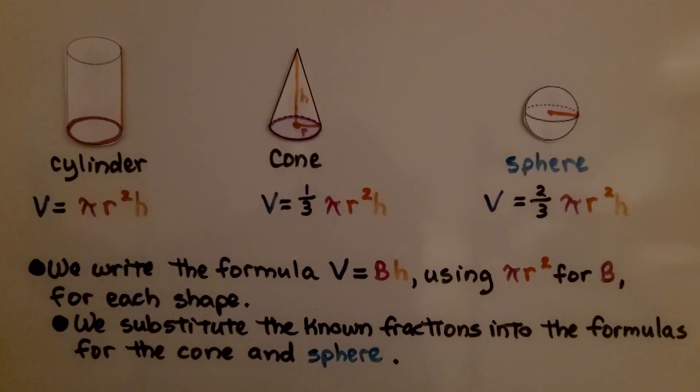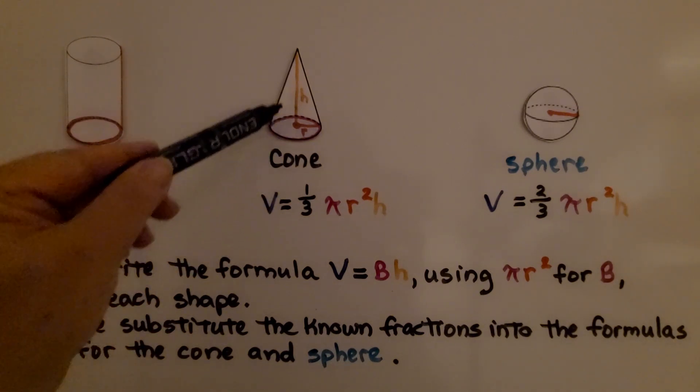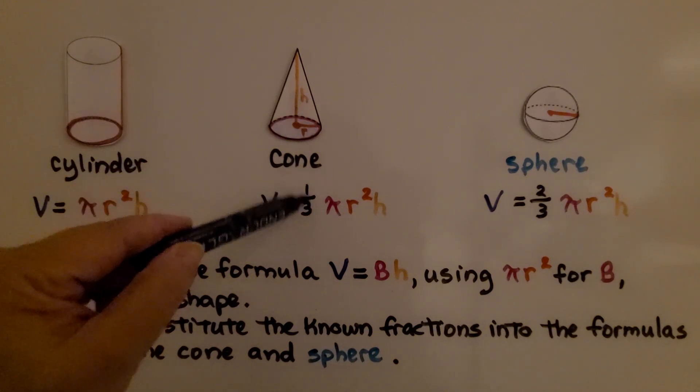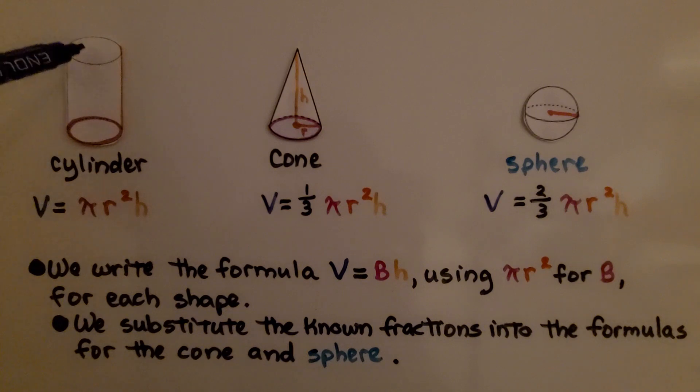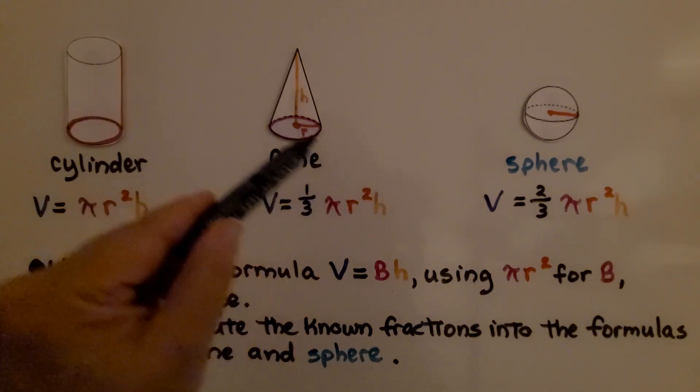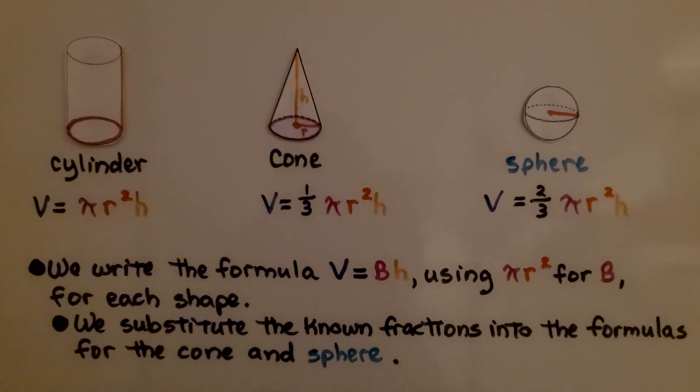We learned about the volume of a cylinder. It's πr² to find the area of the base, we multiply it by the height. For the cone, we found that when we filled the cone with rice, it filled the cylinder one-third of the way. It took three of these cones to fill it all the way. So we have 1/3 πr² for the base area times the height, and that'll give us the volume of the cone.